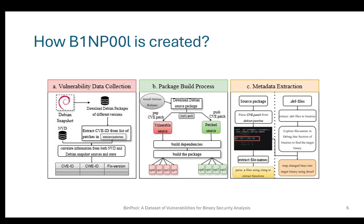After collecting this data at source level, it's time to build the Debian package. In order to do that, we first installed the necessary environment to build the package. After building the environment, it's time to modify the source code to contain both vulnerable and patched versions. In order to do that, we used Quilt, which is a Debian tool to modify the source code.